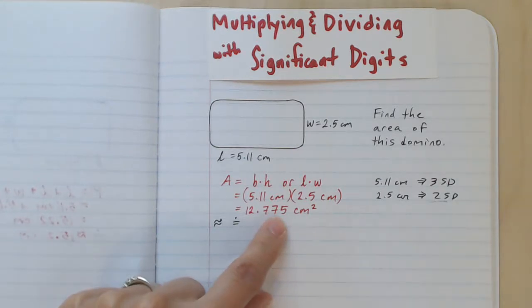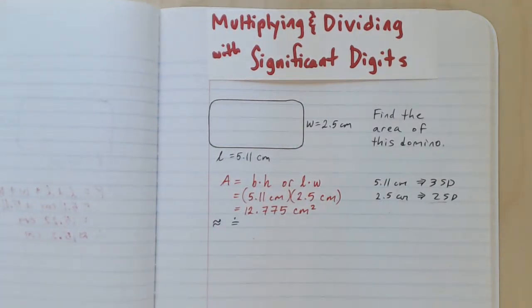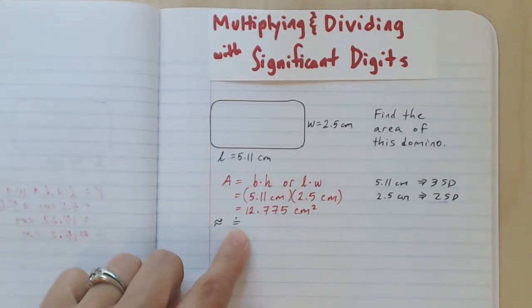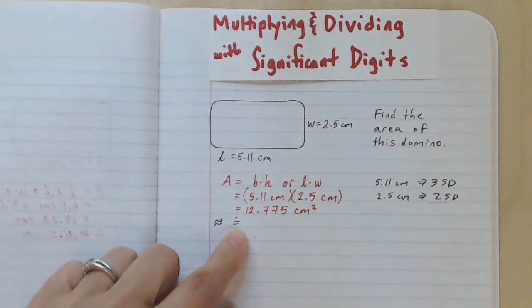We cannot keep all of these digits. They're not all, under this rule, they're not all going to be appropriate in the answer. So we'll write approximately equal to using one of these signs, and then let's use the rule.